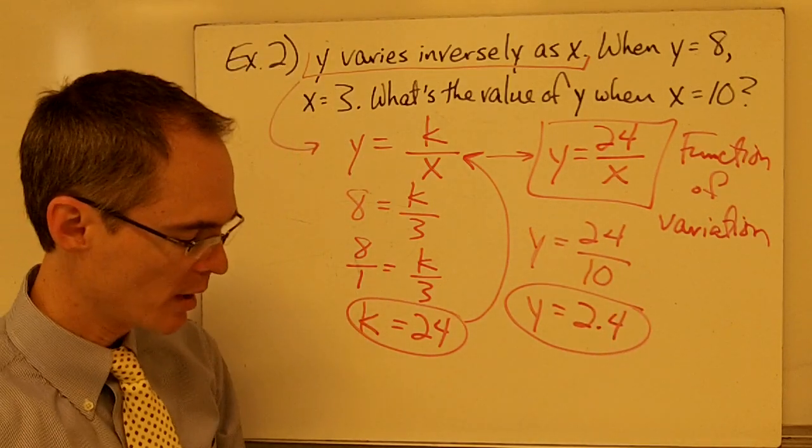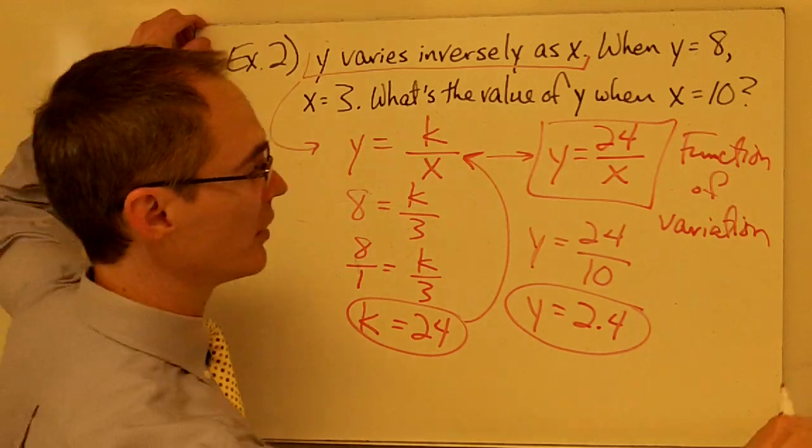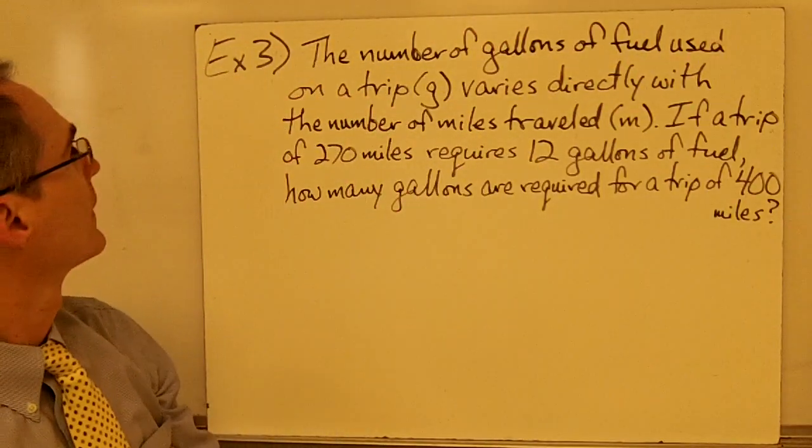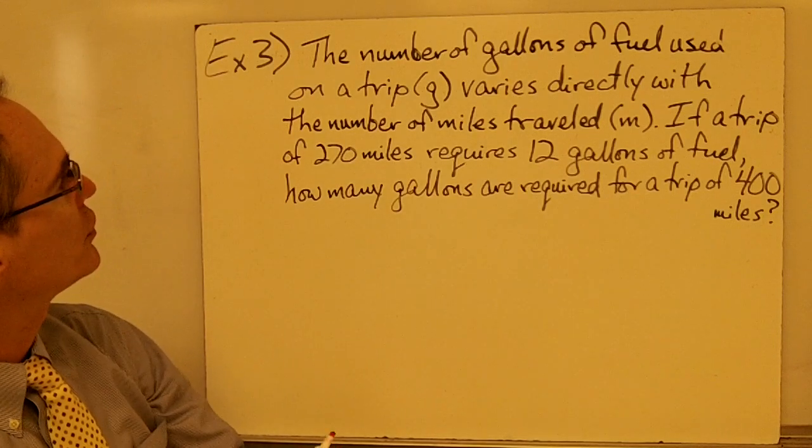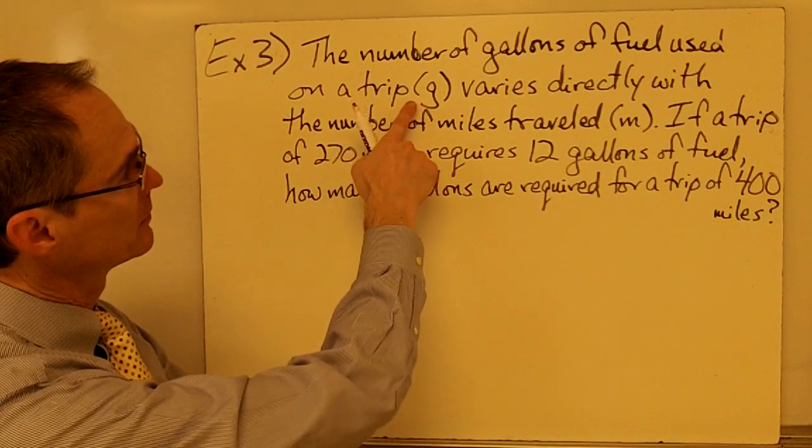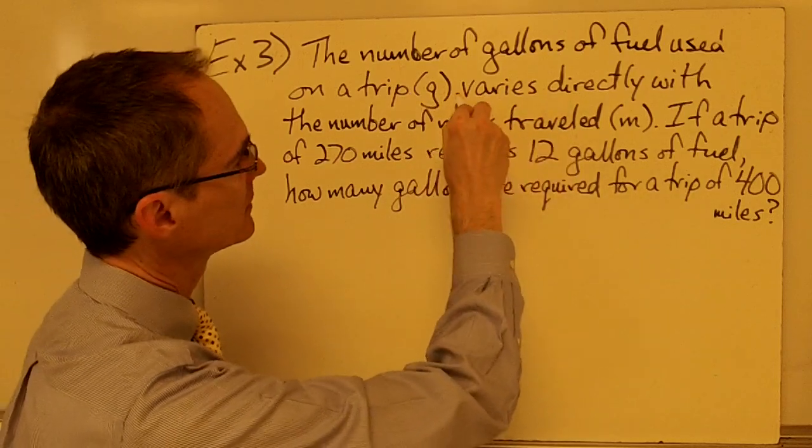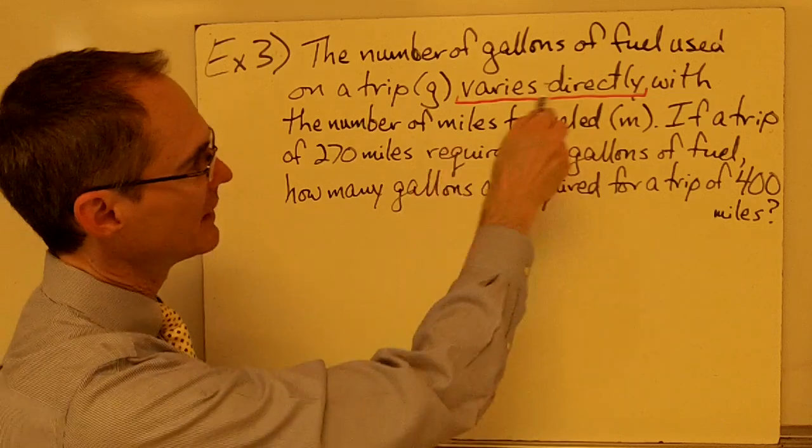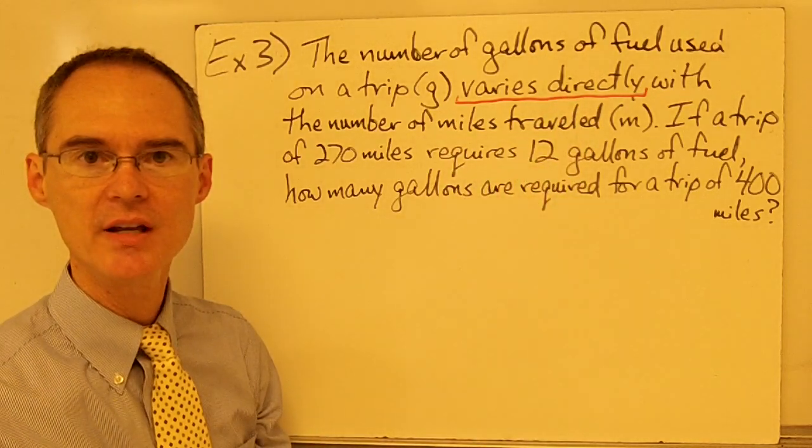Now, let's take a look at a word problem involving direct or indirect variation. Sample number three. The number of gallons of fuel used on a trip varies directly with the number of miles traveled. Again, this is telling me I've got a direct variation problem.